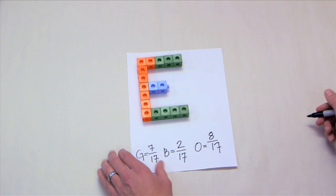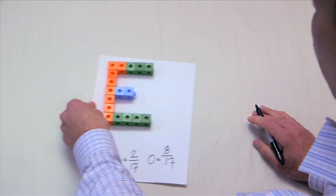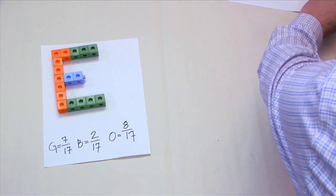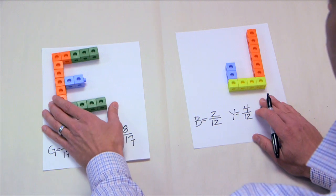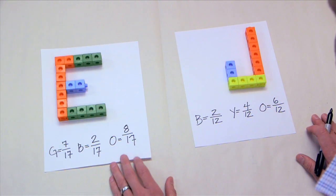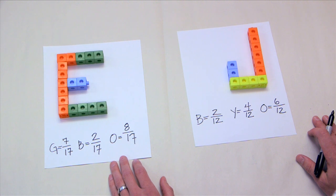Students then compare their letter with another student's letter that contains at least one similar color. In our example, the two letters have different numbers of cubes.